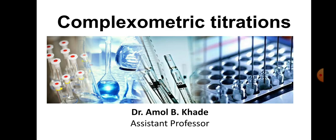In the first part we have seen what complexometric titrations are. It is mainly the complex formation between the central metal ion, which is usually electropositive, with that of the complexing agent. They form a complex, and we use an indicator to detect the equivalence point. We have seen the principle of complexometric titrations and what kind of bonding is involved in the formation of these complexes.